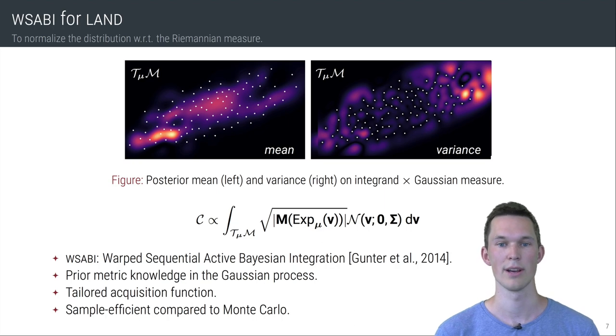Instead, we employ adaptive Bayesian quadrature to compute the integral. Specifically, we use WASABI, Warped Sequential Active Bayesian Integration.